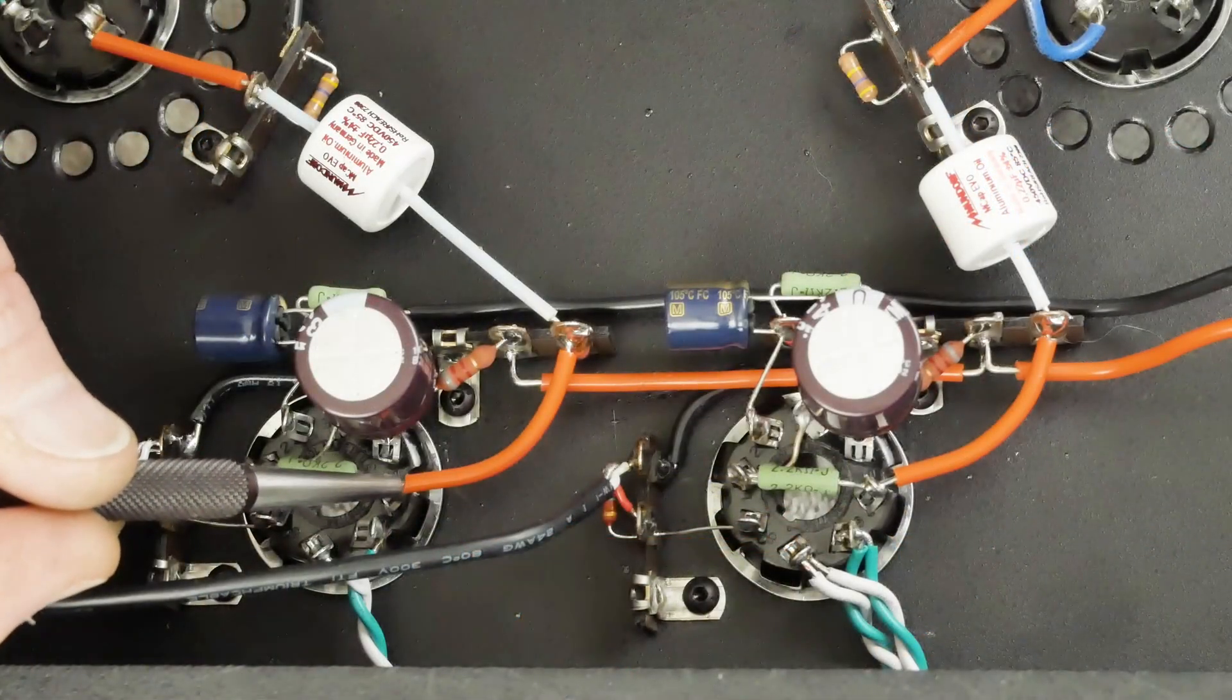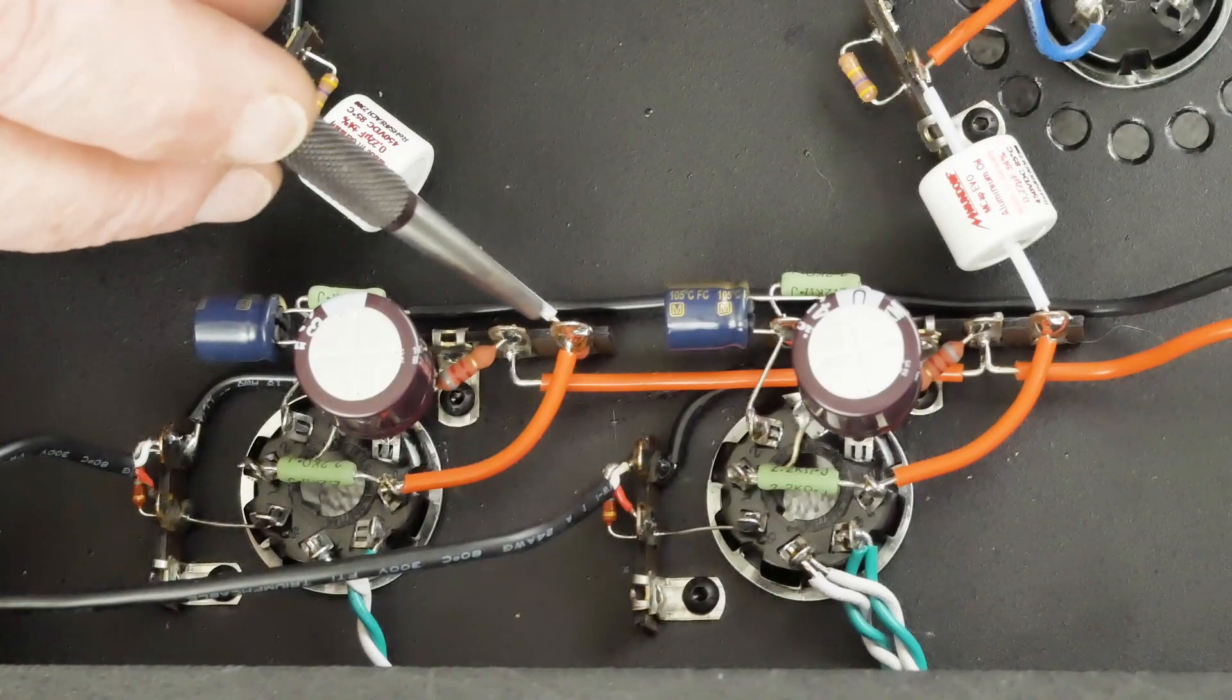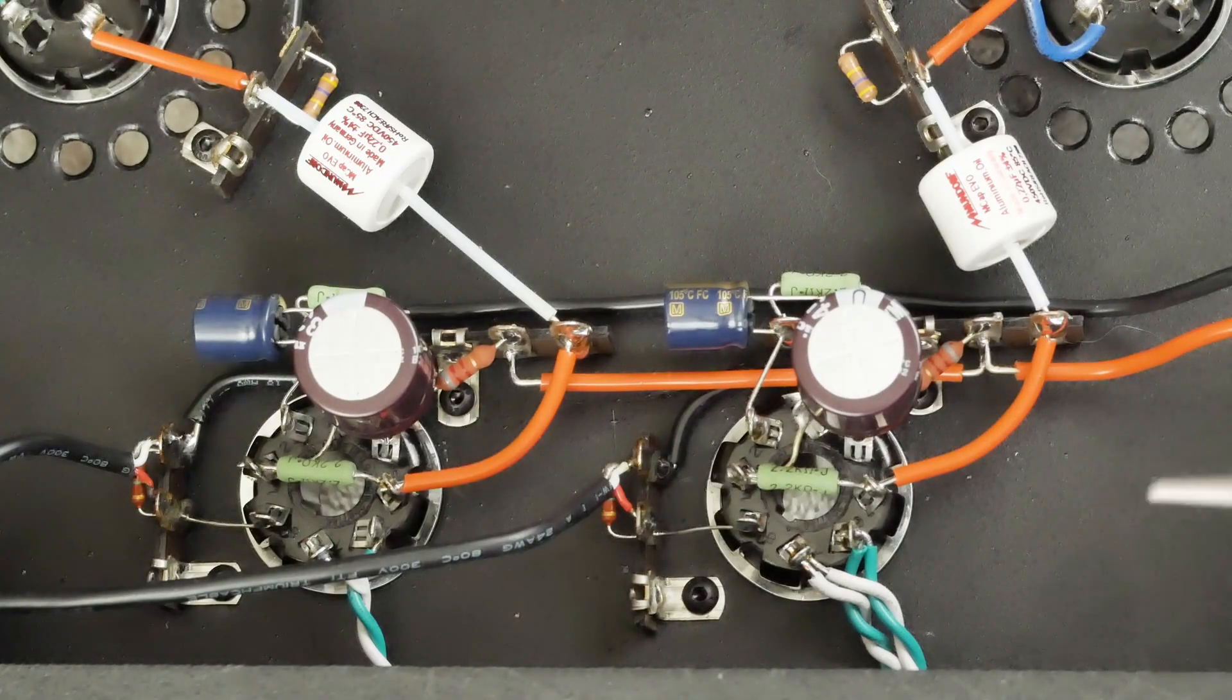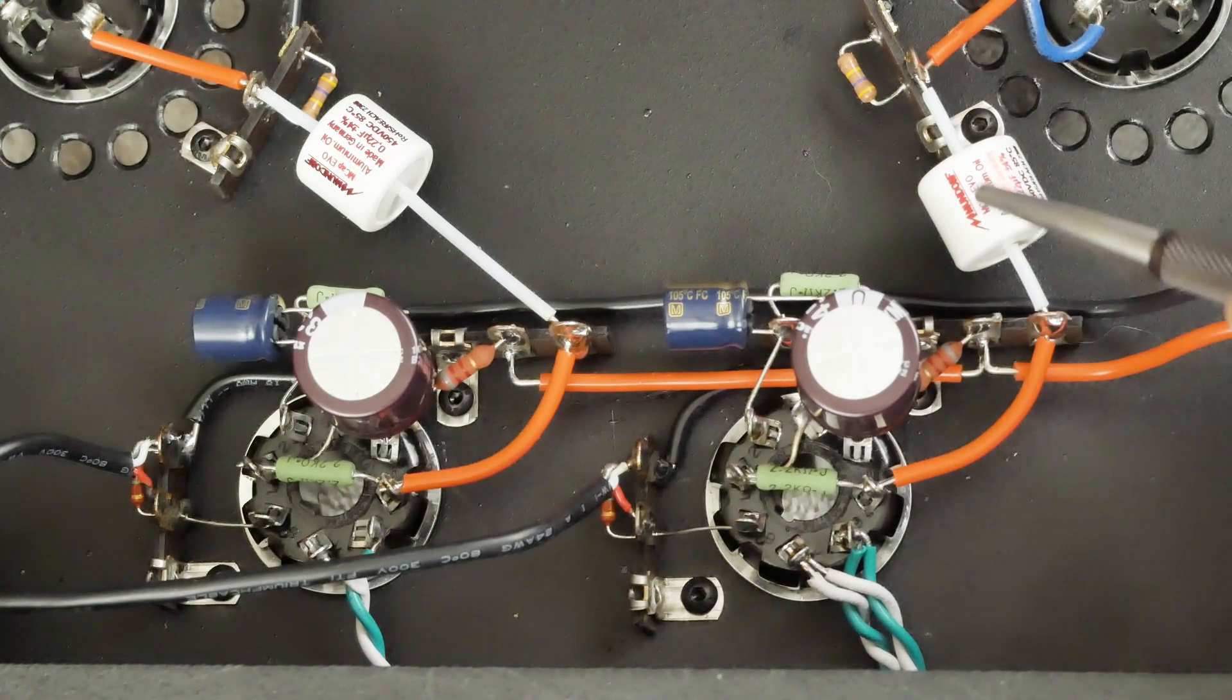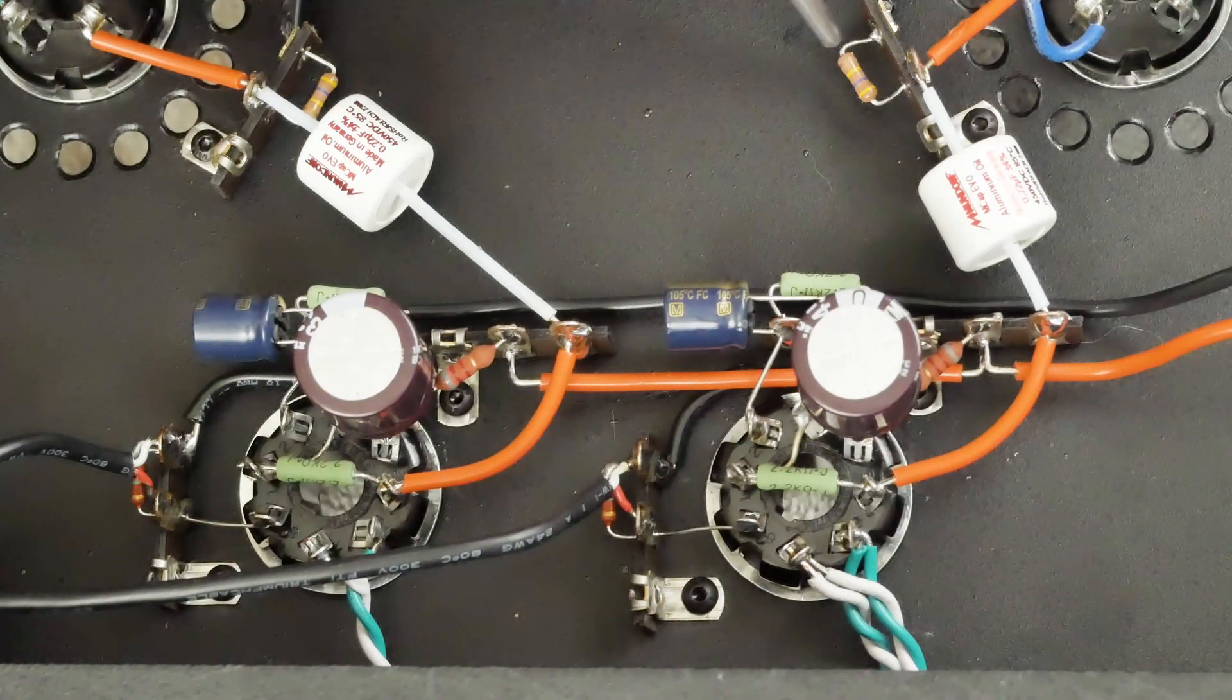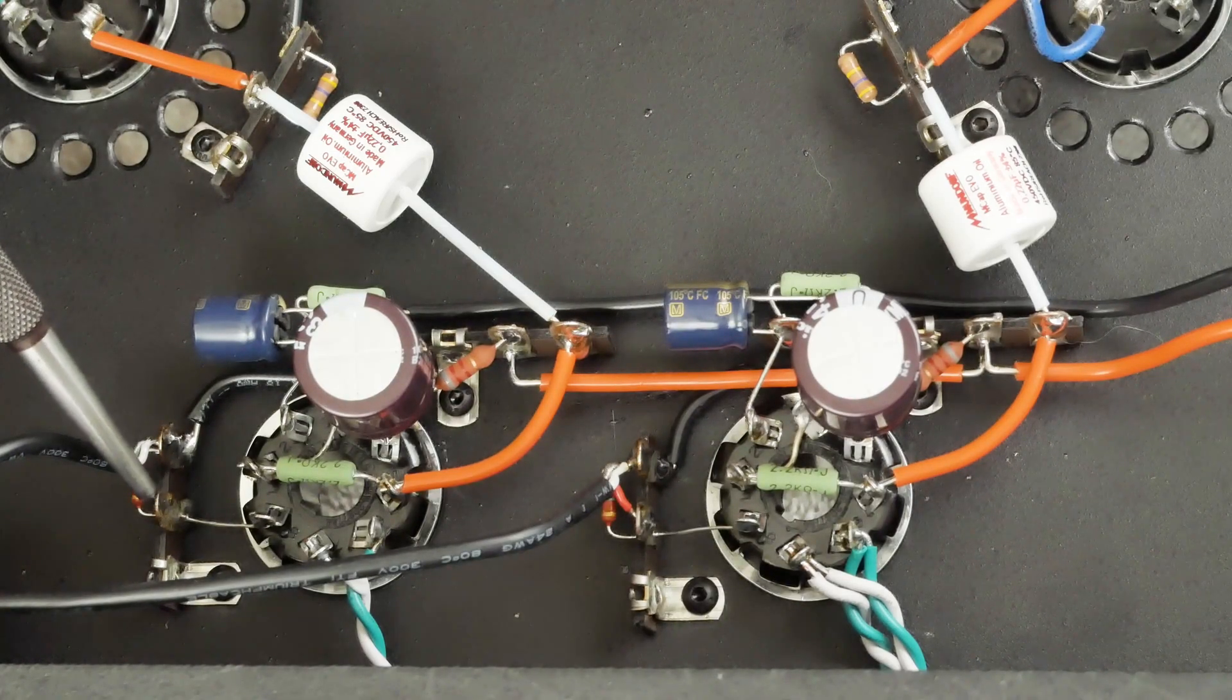This terminal right here is the cathode of the upper triode, and that's where we pull the signal off. It comes around to this terminal. This is the coupling cap that goes over to the grid of the output tube. We have the same thing over here - this is the cathode of the upper triode, and this is our coupling cap that goes to the grid of the output tube.